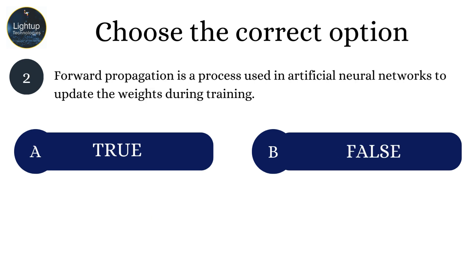Forward propagation is a process used in artificial neural networks to update the weights during training.